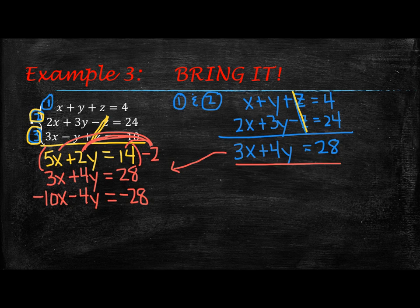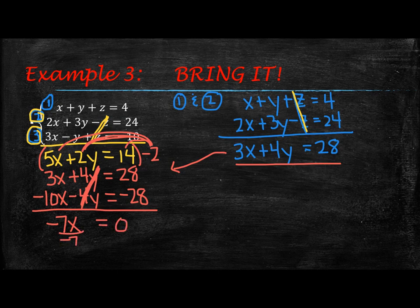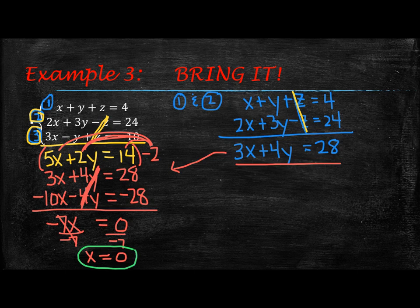Now I'm going to take those equations and add them up. The y terms cancel, and you have negative 7x equals 0. So if I divide both sides by negative 7, 0 divided by anything gives you 0. So now I have x equals 0.